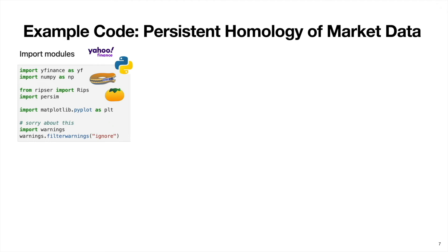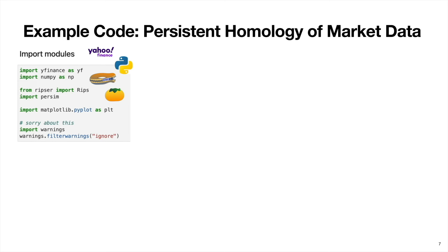Okay, so similar to the last video, we start by importing Python libraries. The notable libraries here are Yfinance, which gives us an API to grab market data and the Ripser and Persim modules, which are part of the same scikit TDA ecosystem from the last video.